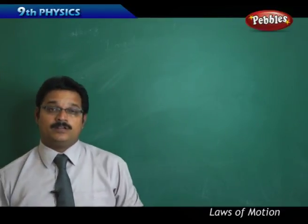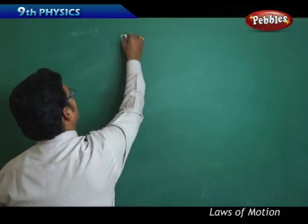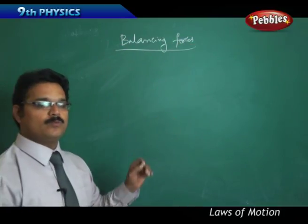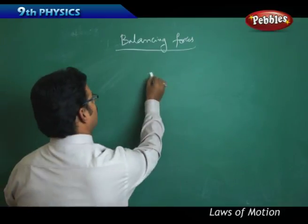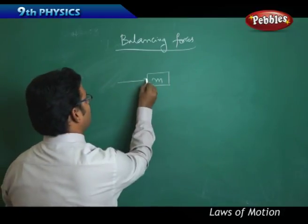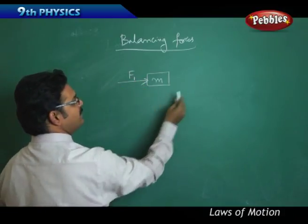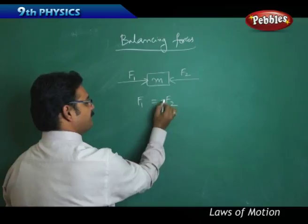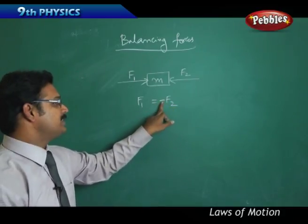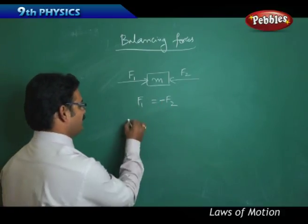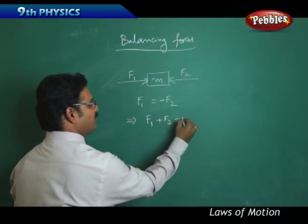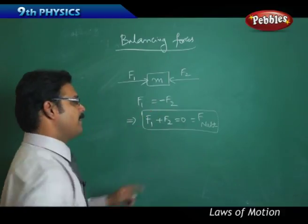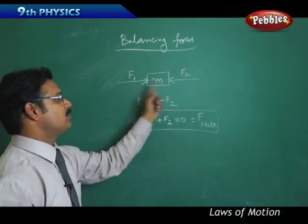Now we want to go a little deeper into the topic of balancing forces. So what is meant by balancing force? Take a block of mass M. There are two forces acting on it: force F1 acting towards the right and force F2 acting towards the left. Both are equal and opposite — equal represented by the equals symbol, opposite represented by the minus symbol. This implies F1 plus F2 equals zero, which is called the net force. So the net force acting on the body is zero.